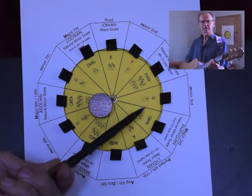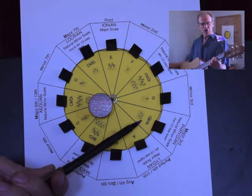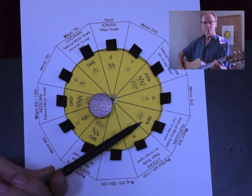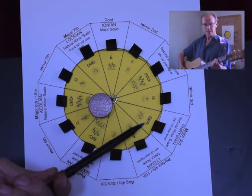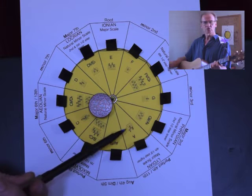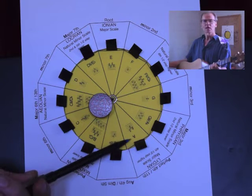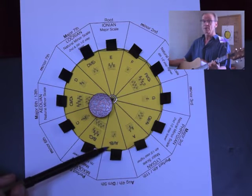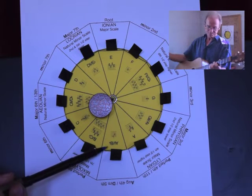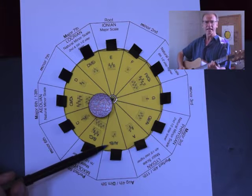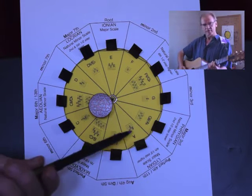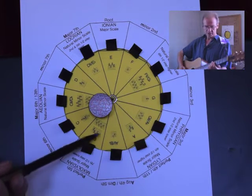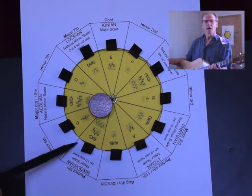After that, we have an A flat and a G sharp. Again, same note, written differently, but sounds the same. We have an A note at the fifth fret. A sharp, B flat, because it's a half a step higher than the A, but a half a step lower than the B. This makes it an A sharp, higher in pitch, or a B flat, lower in pitch by a half a step. B.